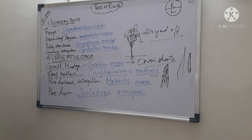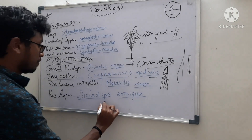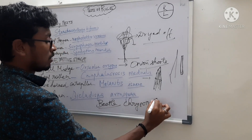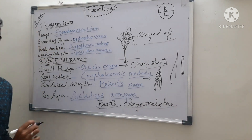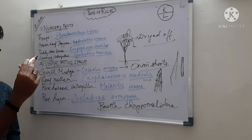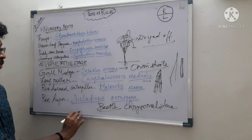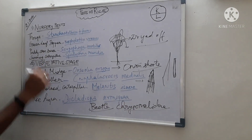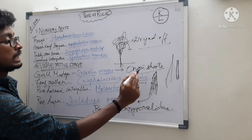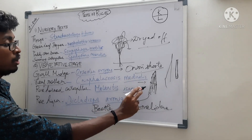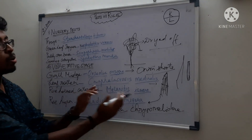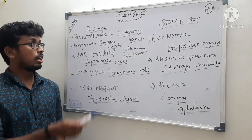Next is rice hispa, which is a beetle pest belonging to family Chrysomelidae under order Coleoptera. Its characteristic symptom is white longitudinal streaks present on the rice leaf, similar to that of the leaf roller. However, hispa does not cause any webbing, whereas the rice leaf roller rolls the leaf and causes webbing. This is the key differentiating characteristic.